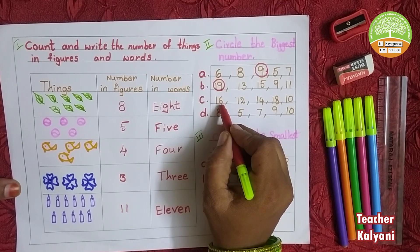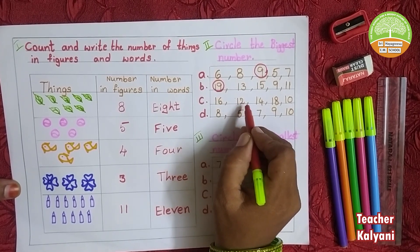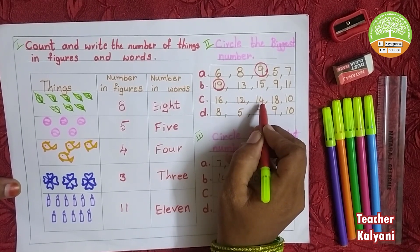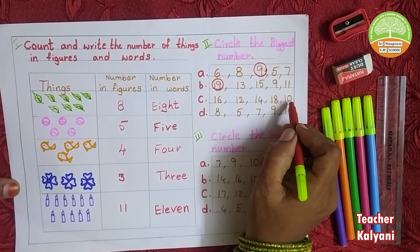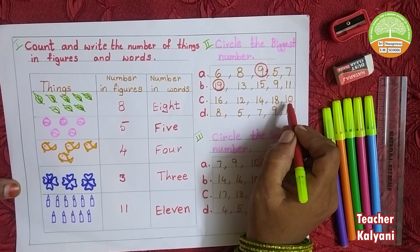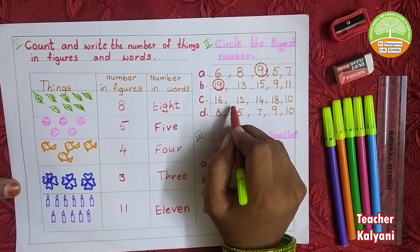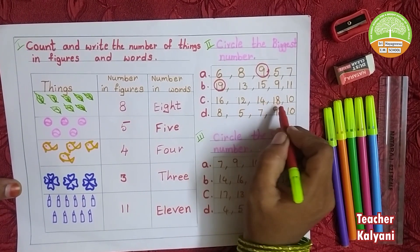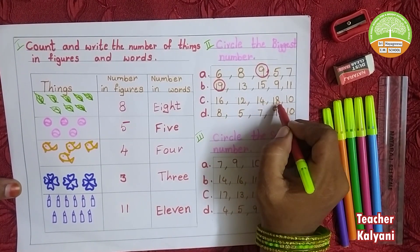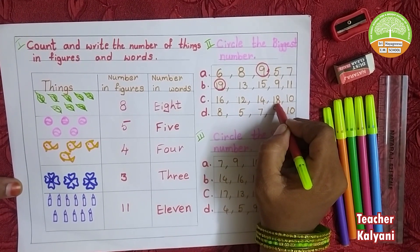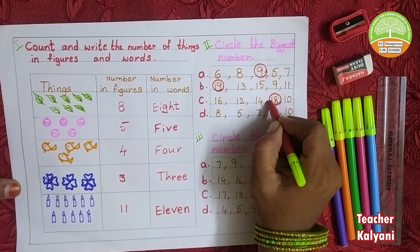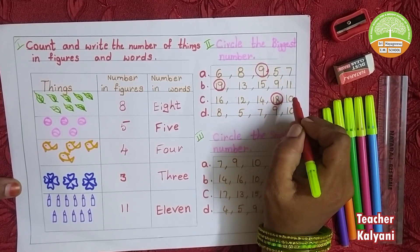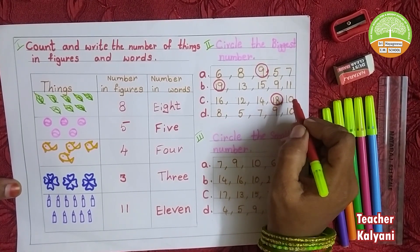Next one: 16, 12, 14, 18, 10. Which is the biggest number in this box? 18. The biggest number is 18.